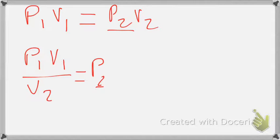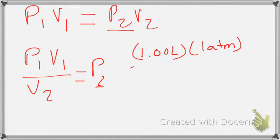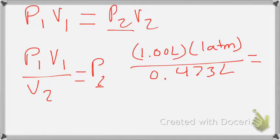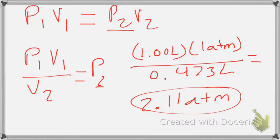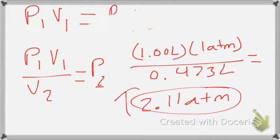We know there's an inversely proportional relationship — if volume goes down, pressure goes up. Starting with 1 liter and compressing to 0.473 liters, we rearrange for P2: P2 = P1V1 / V2. Plugging in: 1 liter times 1 atm divided by 0.473 liters gives a new pressure of 2.11 atm. The volume went down and the pressure went up, confirming Boyle's Law.